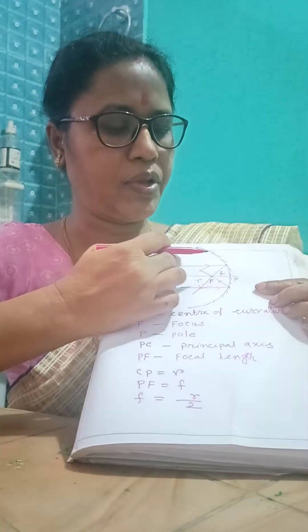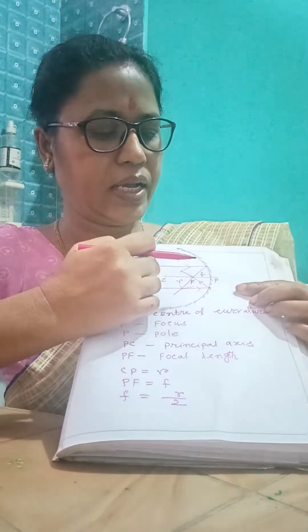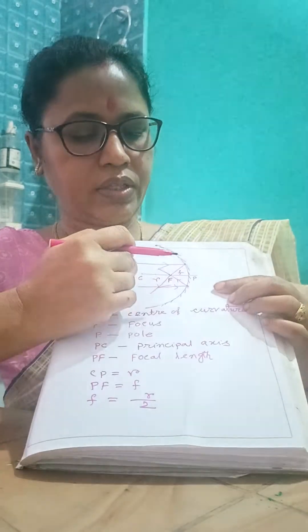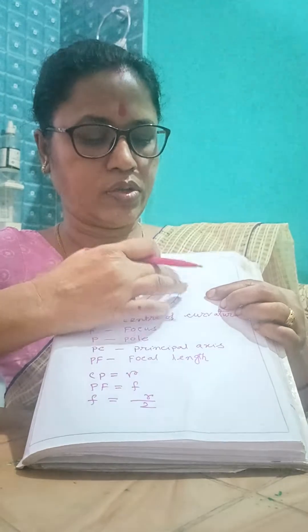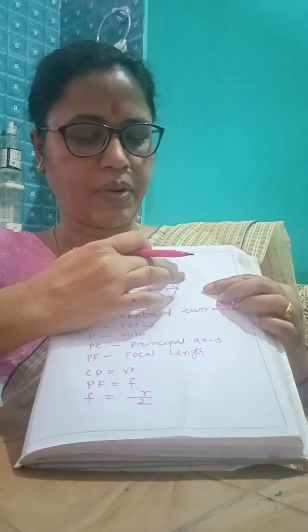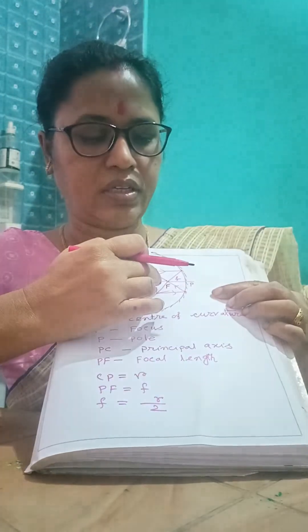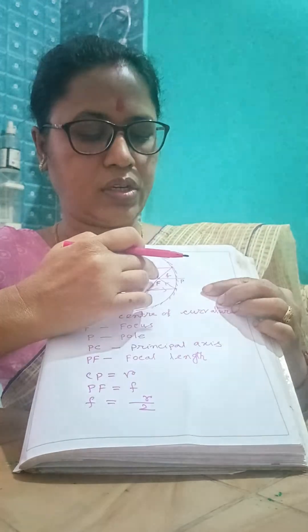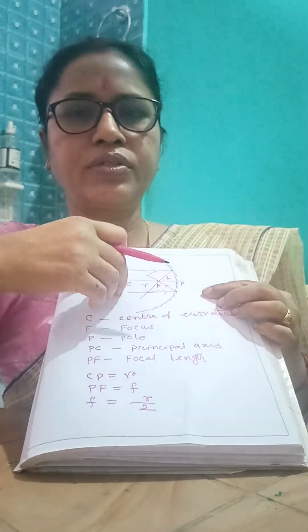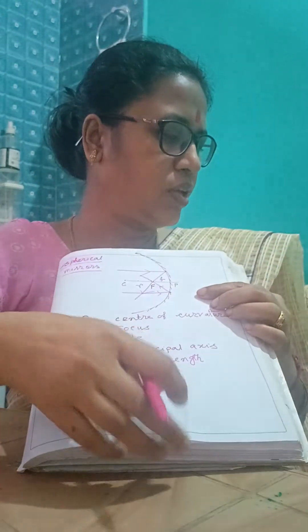Concave mirror is called a converging mirror because when a beam of rays falls on it and reflects, the reflected rays converge to a point. So, a concave mirror is known as a converging mirror.